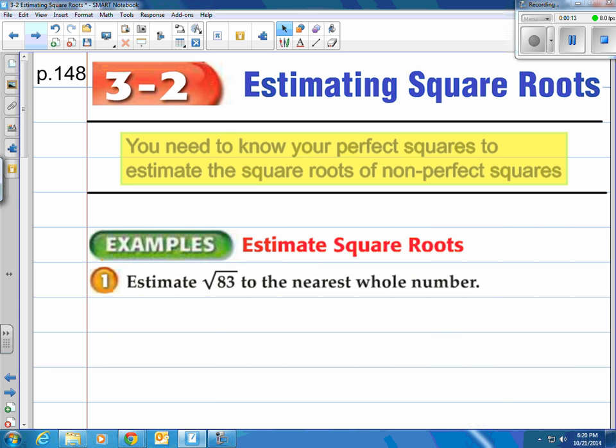To estimate square roots you're going to need to know your perfect squares. If you remember your perfect squares those are 1, 4, 9, 16, 25, 36, 49, 64, 81, 100, and it goes on and on, but those are the perfect squares that are 10 down to 1.